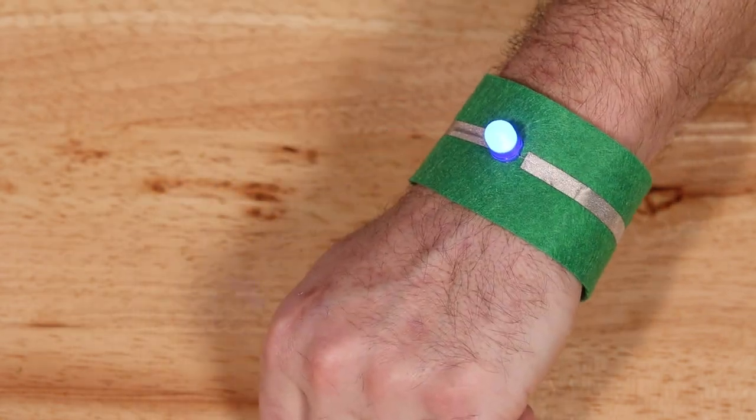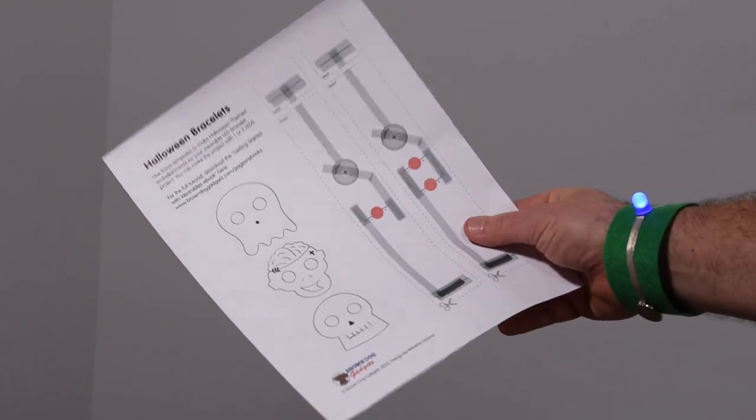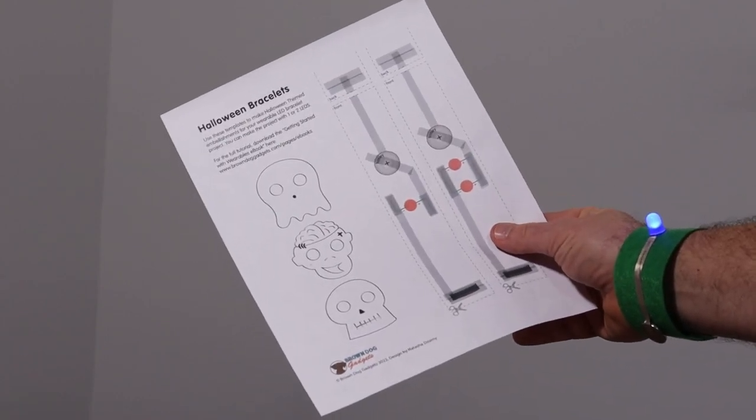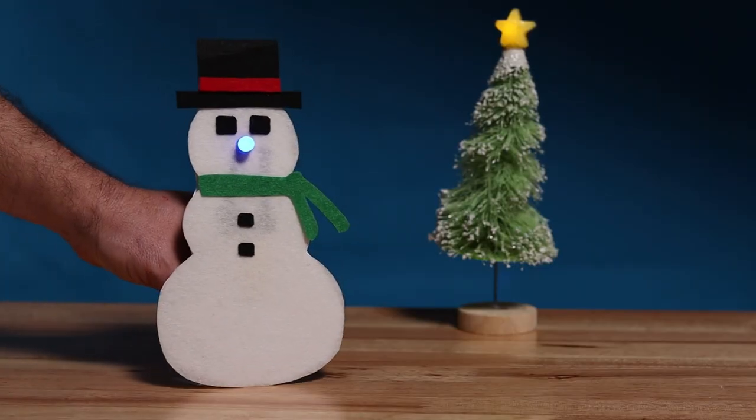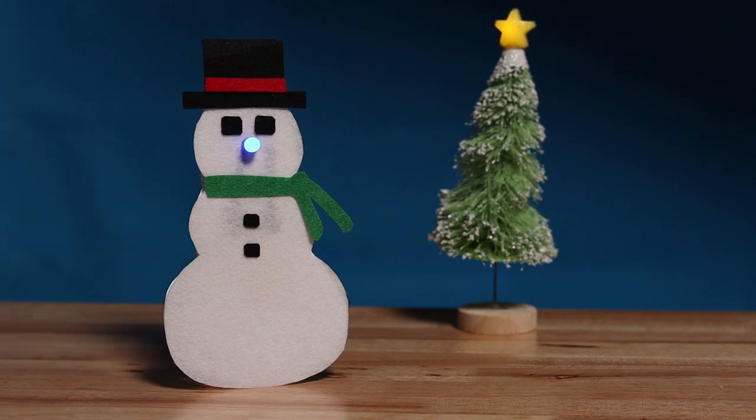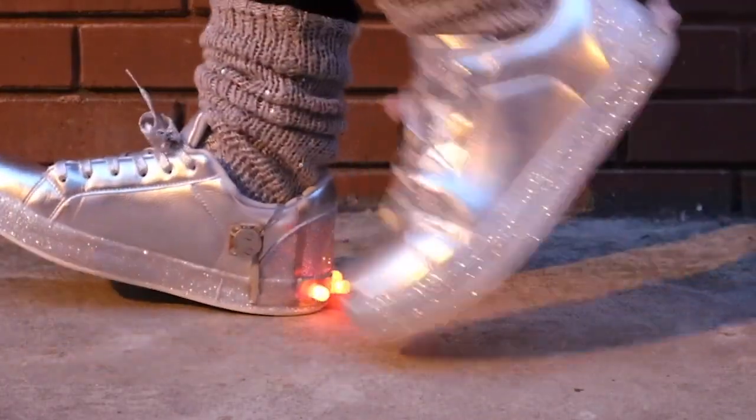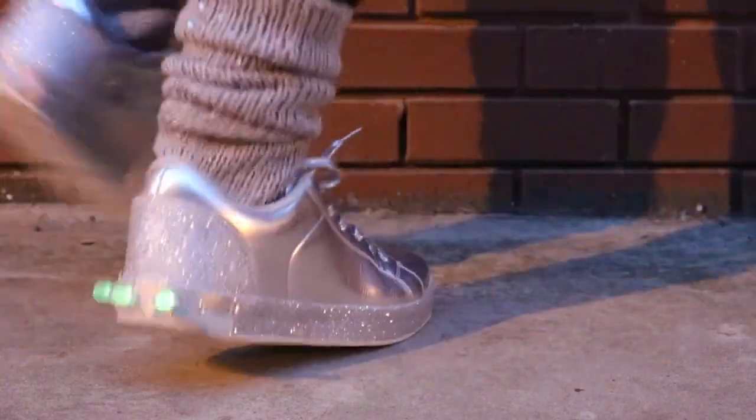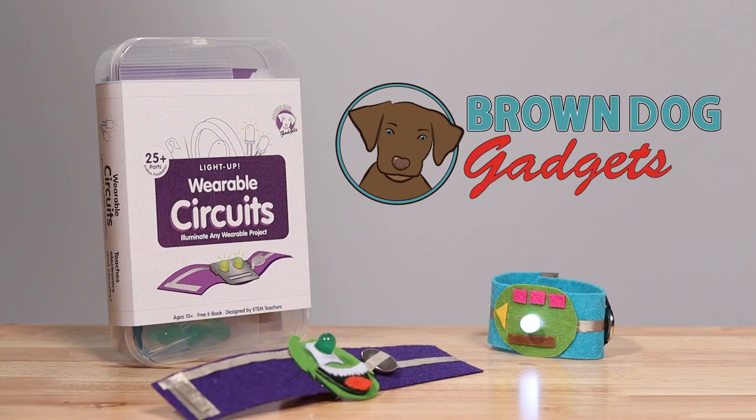Now that you know how to make a basic circuit, try your own with our free downloadable templates. Make something crafty. Or go totally wild. The only limit is your imagination. With the Light Up Wearable Circuits Kit by Brown Dog Gadgets.